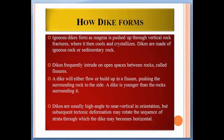How do dikes form? Igneous dikes form as magma is pushed up through vertical rock fractures, where it then cools and crystallizes. Dikes are made up of igneous rock or sedimentary rock. Dikes frequently intrude into open spaces between rocks called fissures — a dike will either flow or build up in a fissure, pushing the surrounding rock to the side. A dike is always younger than the rock surrounding it.